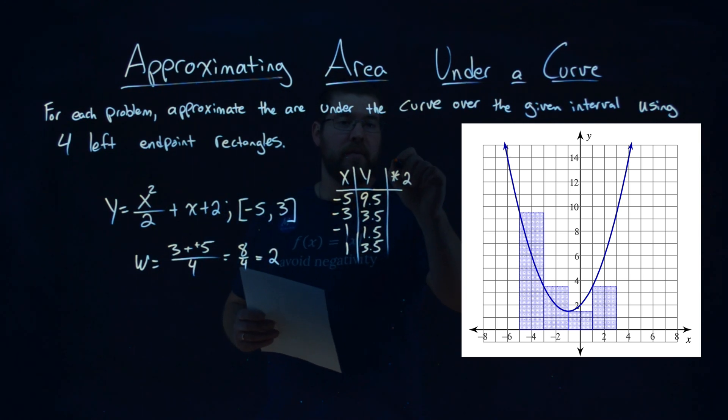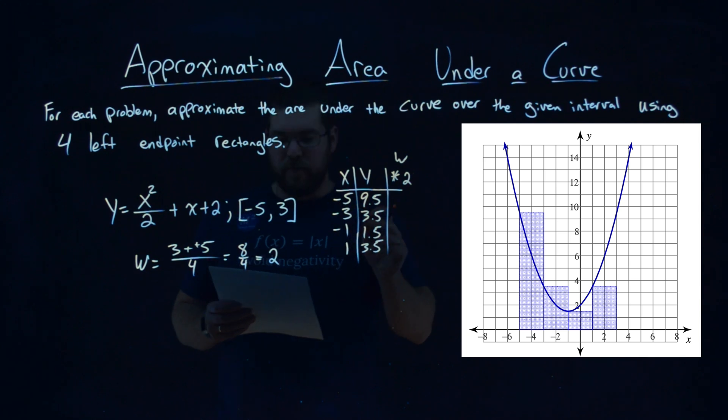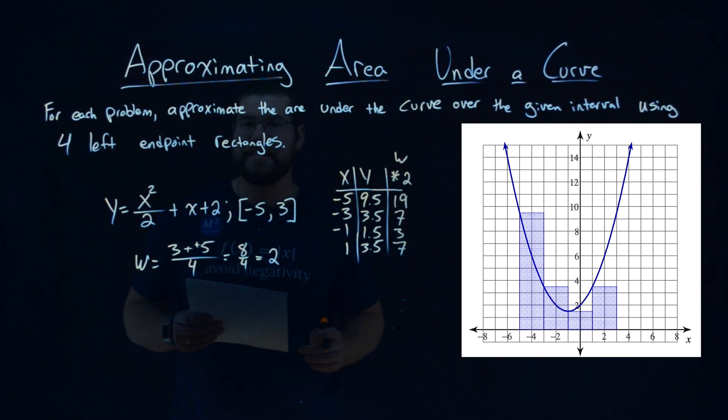I multiply that width value right here by 2. So we take 9.5, multiply by 2, and I get 19. Then I have 3.5 as 7, and 1.5 times 2 is 3. And again, 3.5 is 7.